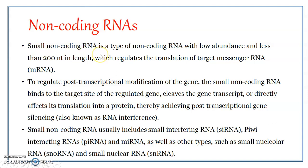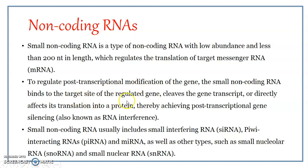Small non-coding RNAs are a type of non-coding RNA with low abundance, present in lower numbers, and usually the length is less than 200 bases. Since RNA is a single strand, the length is measured in bases. These non-coding RNAs usually regulate the translation of the target messenger RNA — they are highly specific. To regulate post-transcriptional modification of the gene or to regulate gene expression related to the transcription process, these non-coding RNAs may bind to the target site of the regulated gene, that is on the DNA.